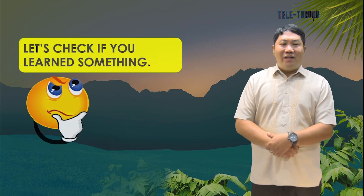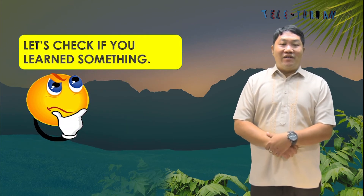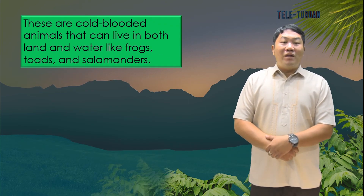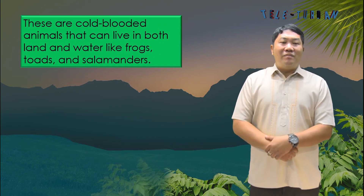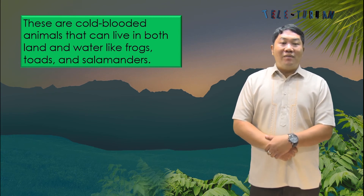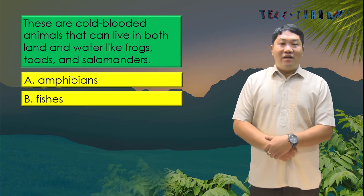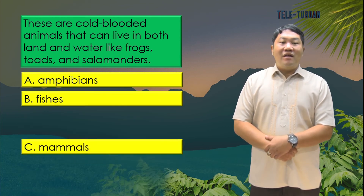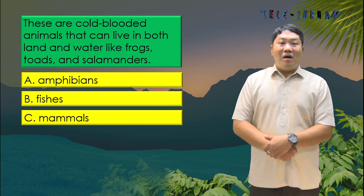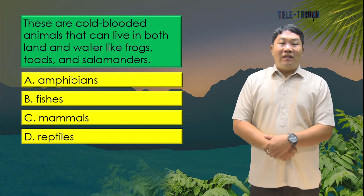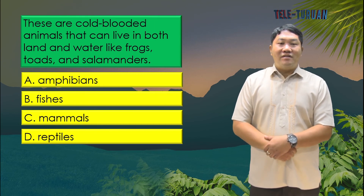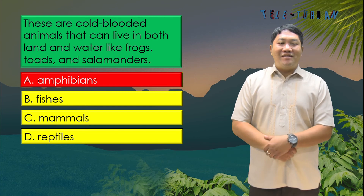Let's see if we learned something by answering these questions. These are cold-blooded animals that can live in both land and water, like frogs, toads, and salamanders. Is it letter A, amphibians? Letter B, fishes? Letter C, mammals? Or letter D, reptiles? The answer is letter A, amphibians.